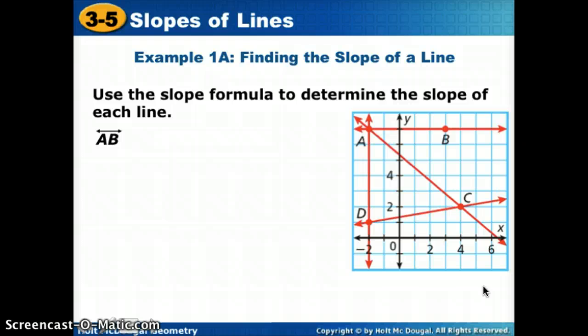It says to use the slope formula to determine the slope of each line. So the first one we're going to work with is AB. If we look in the picture and we find A and we find B, we want to find the slope of this line here. So first we need to figure out what these two points are.